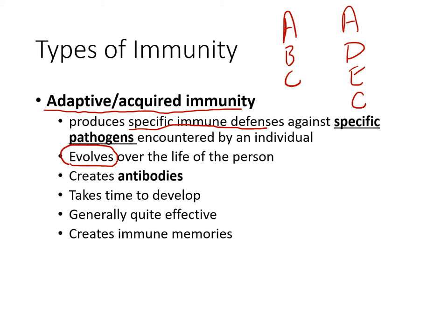The key thing is that adaptive immunity is able to produce antibodies — protein molecules that are the ultimate weapon in the body. If antibodies don't work, we get very ill and need external medicines to recover. Making those antibodies takes some time, so compared to innate immunity, adaptive immunity does not offer immediate protection.